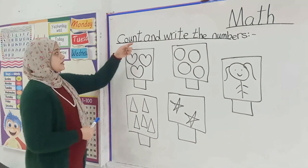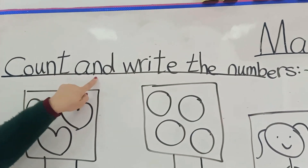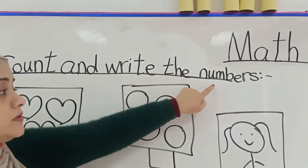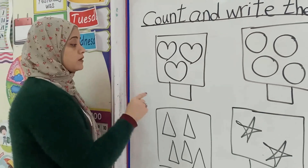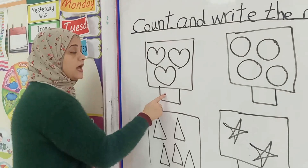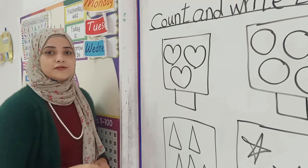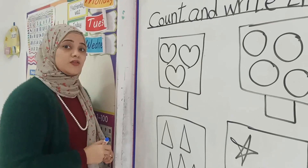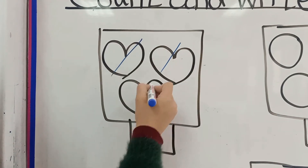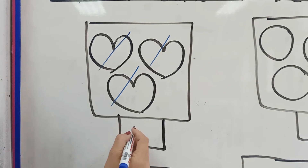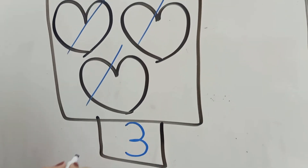In this exercise, count and write the numbers. Here, KG1, in this exercise we are going to count and write the numbers in the empty box. Don't forget, KG1, to count with a short stick so as not to be confused. Are you ready? Let's do it together. How many hearts here, KG1? Let's count together: one, two, three, four. Excellent.